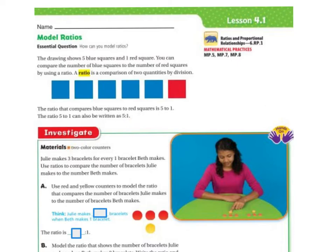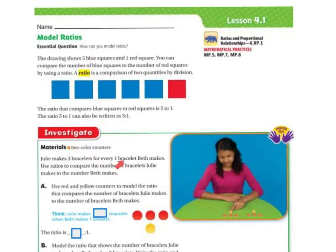Let's investigate. Materials: 2 colored counters. You're welcome to grab some from the box at the front of the room. Julia makes 3 bracelets for every 1 bracelet Beth makes. Use ratios to compare the number of bracelets Julia makes to the number Beth makes. Use red and yellow counters to model this ratio. So for every 3 bracelets Julia makes, Beth makes 1. The ratio is 3 to 1.